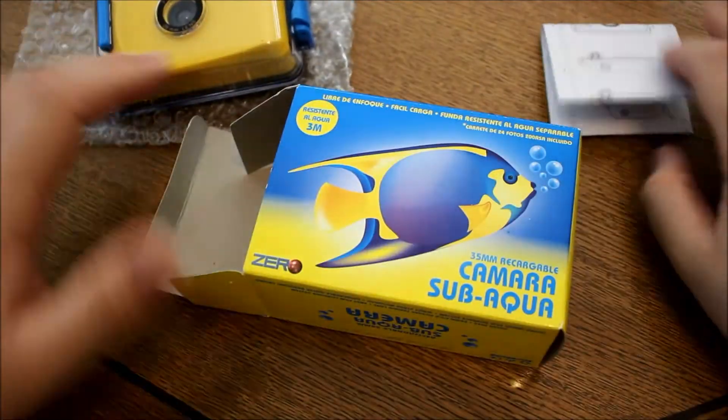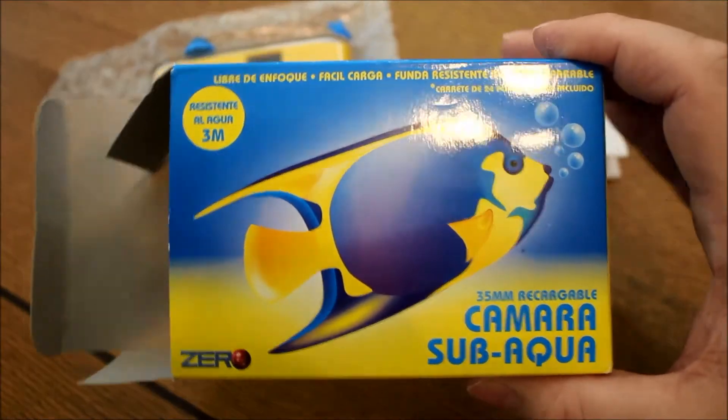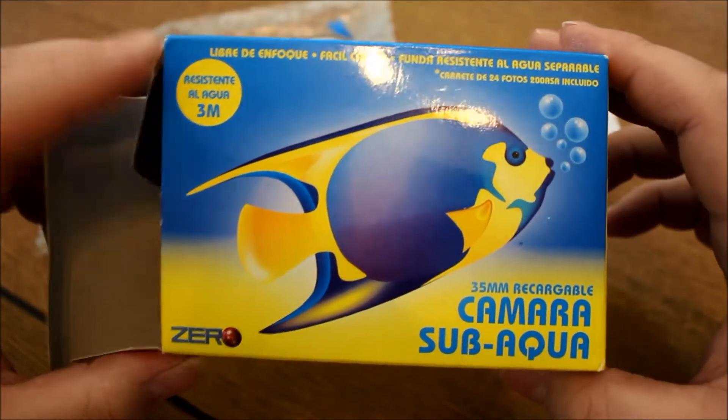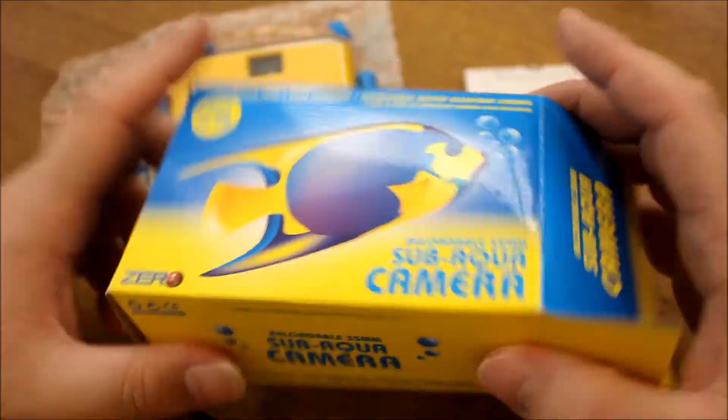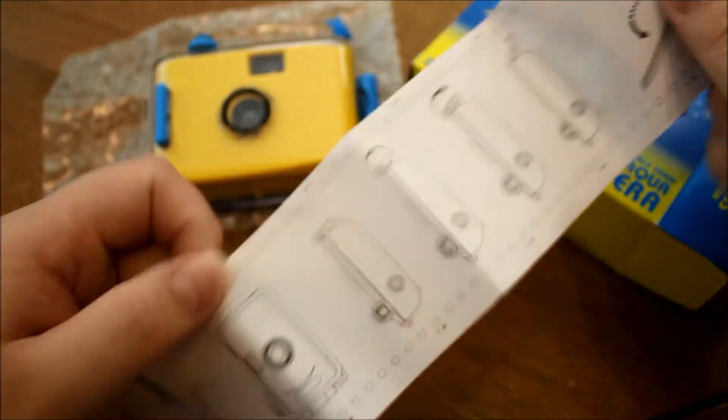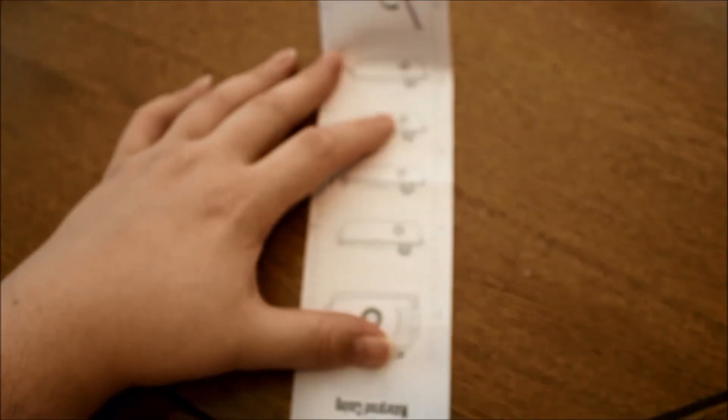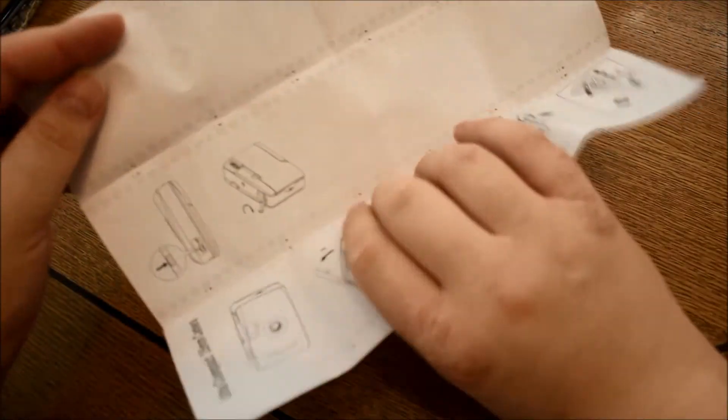But wait, this video is not over yet. We still have to take a look at some pieces. But first, we'll take a look at this box. It claims to be water resistant up to three meters. And it's actually nicely designed with this fish on top. I mean, it's quite nice fitting the color of the camera. And now we just take a look at the instruction manual.